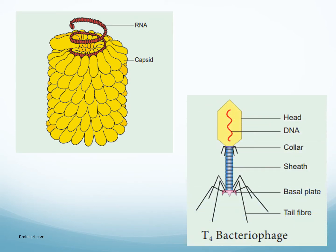Here we see two pictures. One is a virus with a capsid protecting the RNA genetic material. The other diagram shows a bacteriophage — it has a head containing DNA, a collar, a sheath, a basal plate, and tail fibers. These are the different parts of a bacteriophage. Students often get questions to draw a well-labeled diagram of the T4 bacteriophage, so this diagram is important.